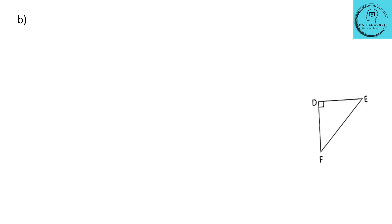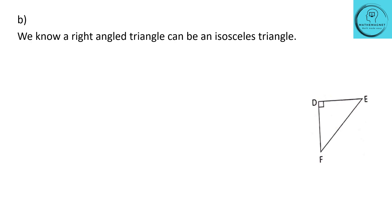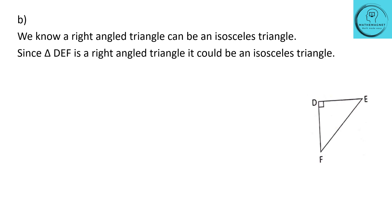Let's look at question B. The triangle given is right-angled triangle DEF. In a right-angled triangle, the other two angles can be equal — it's a possibility. So a right-angled triangle can also be an isosceles triangle. Since there is one angle of 90 degrees, and in an isosceles triangle two sides measure the same and the angles opposite those equal sides also measure the same, we can say triangle DEF could be an isosceles triangle.